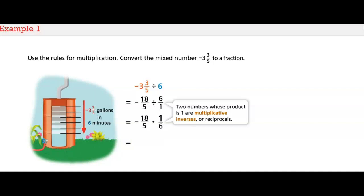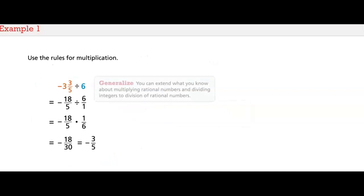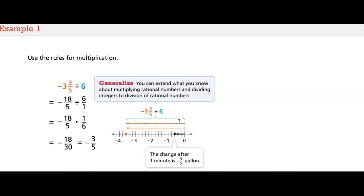Negative eighteen times one is negative eighteen; five times six is thirty. The product is negative eighteen-thirtieths, or negative three-fifths. You can extend what you know about multiplying rational numbers and dividing integers to division of rational numbers. The rules for integer division tell you that when you divide a negative by a positive, your quotient should be negative — and that still works when dividing rational numbers. So the change in the volume of water after one minute is negative three-fifths gallons.